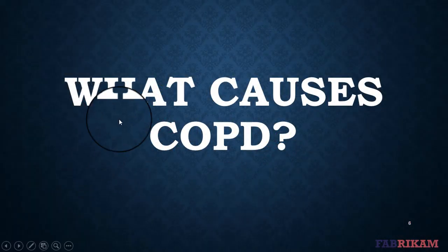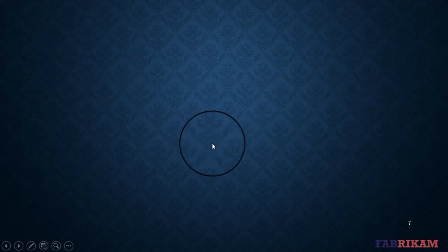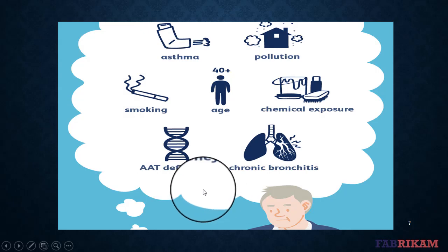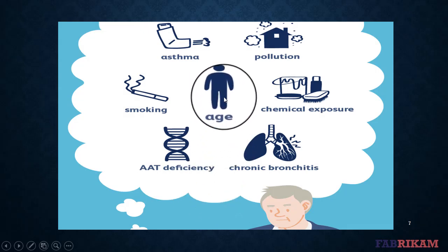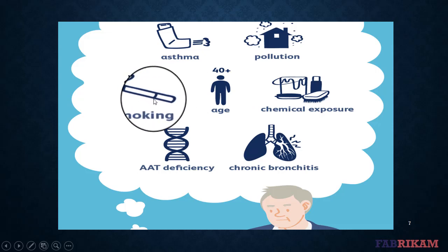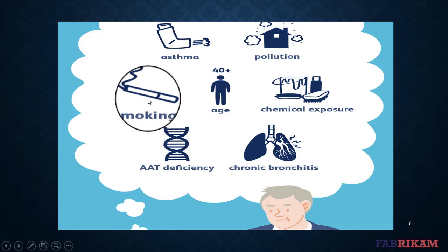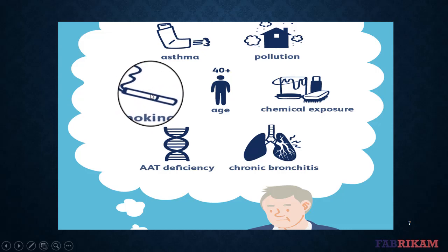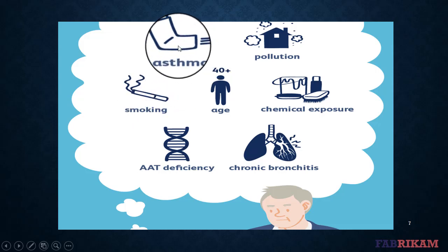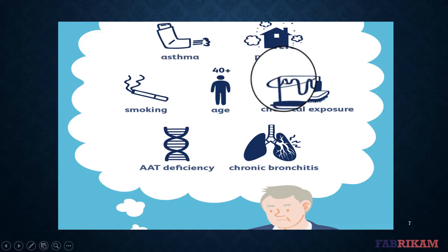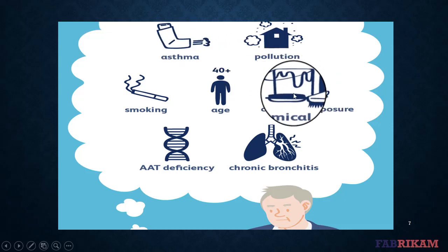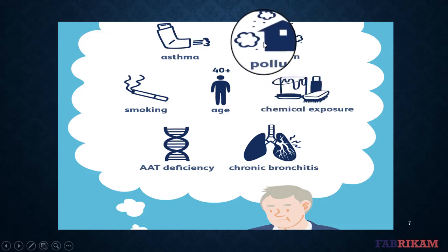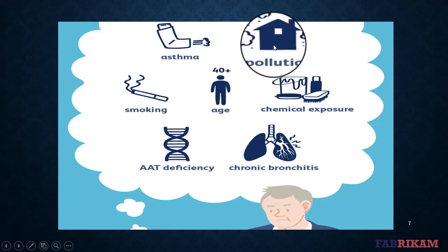Most people with COPD are at least 40 years old and have some history of smoking. The longer and more tobacco products you smoke, the greater your risk of COPD. In addition to cigarette smoking, cigar smoking, pipe smoking, and secondhand smoke can all cause COPD. The risk is even greater if you have asthma and smoke. You can also develop COPD if you are exposed to chemicals, fumes in the workplace, air pollution, or inhaling dust.